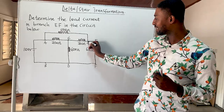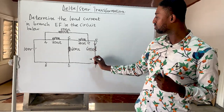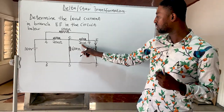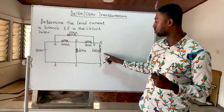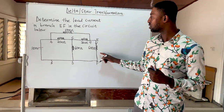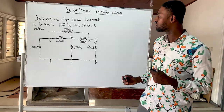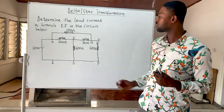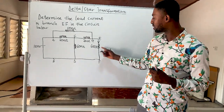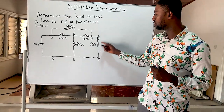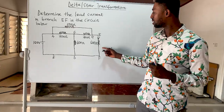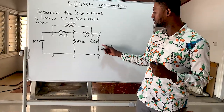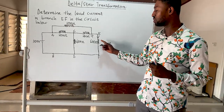We realize there is a junction between the 200 ohm and 600 ohm resistors. So now let's solve this question and calculate the current flowing through this resistor.